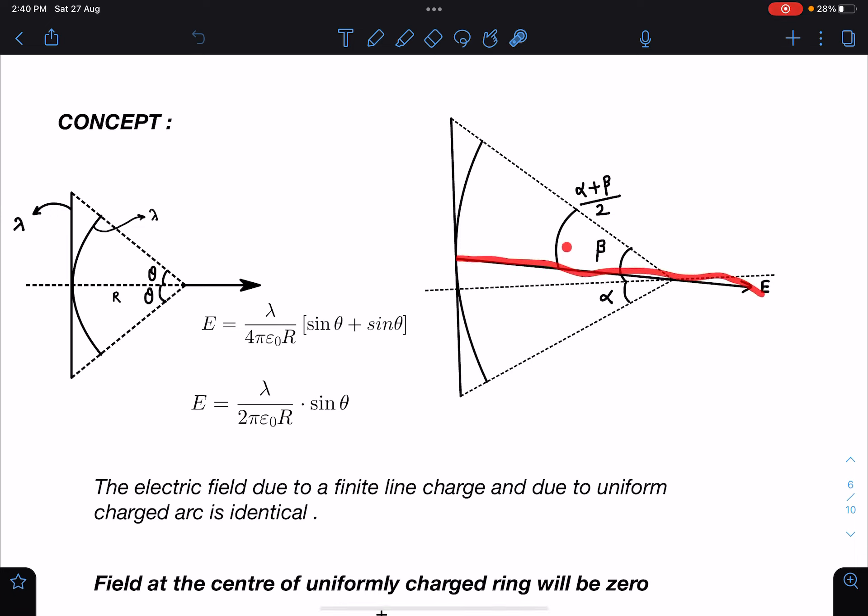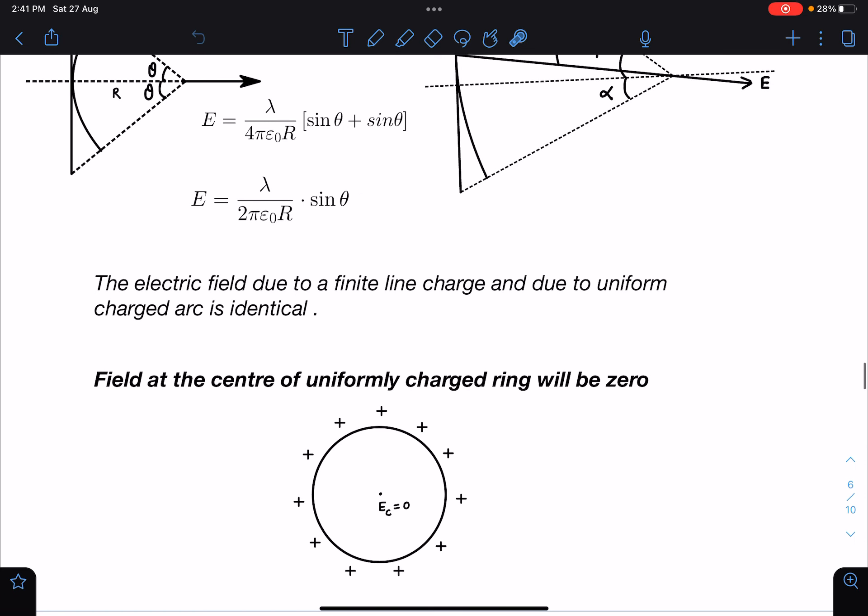So here total angle is alpha plus beta, so from one end it is at an angle of alpha plus beta by two. It will be inclined slightly due to this unsymmetric length of angle alpha and corresponding angle beta.